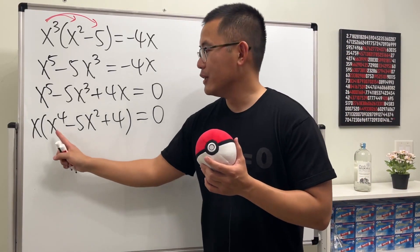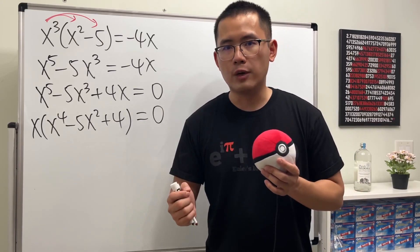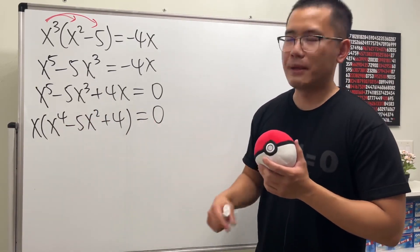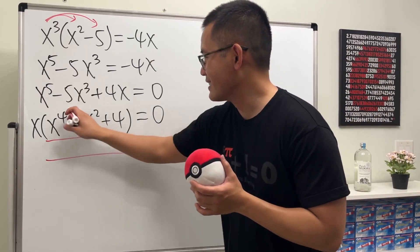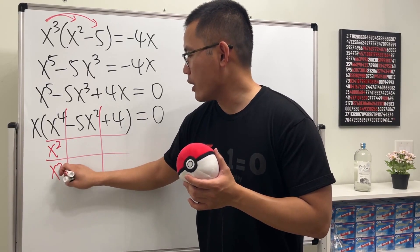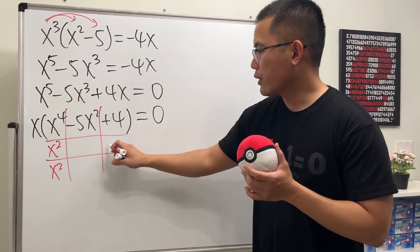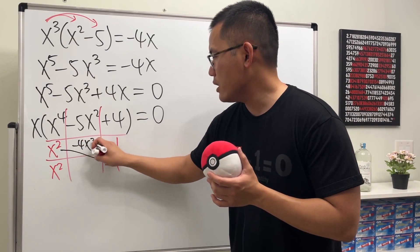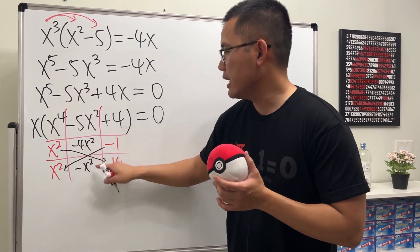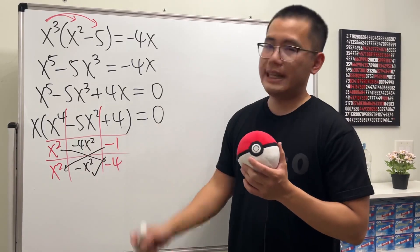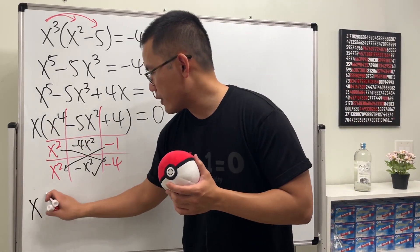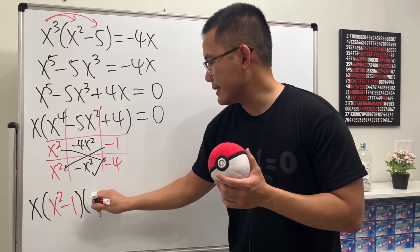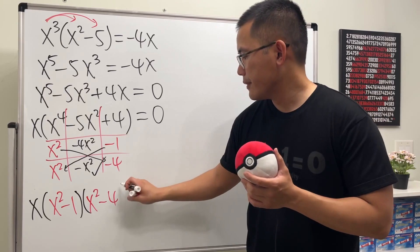Have a look — we have a trinomial, and in fact this is a quadratic trinomial in terms of x squared, because x to the fourth is x squared squared. We can factor this using the tic-tac-toe method. Draw the tic-tac-toe boxes: we need x squared times x squared to get x to the fourth, and to get positive 4 we use minus 1 and minus 4. Checking: this times this gives negative 4x squared, and this times that gives negative x squared, so together we have negative 5x squared — correct. So we have x times (x squared minus 1) times (x squared minus 4) equals zero.